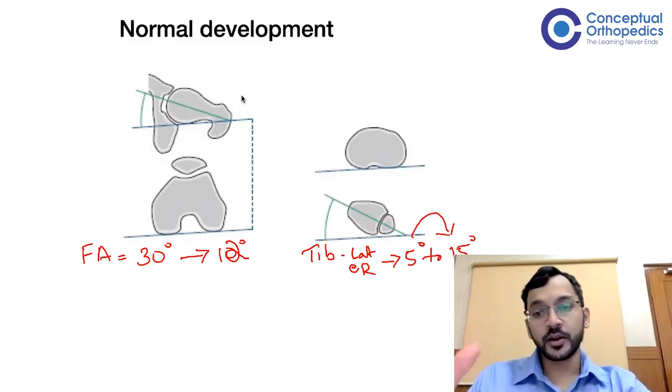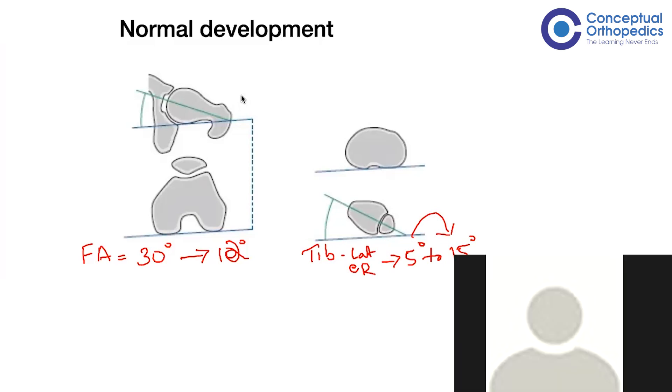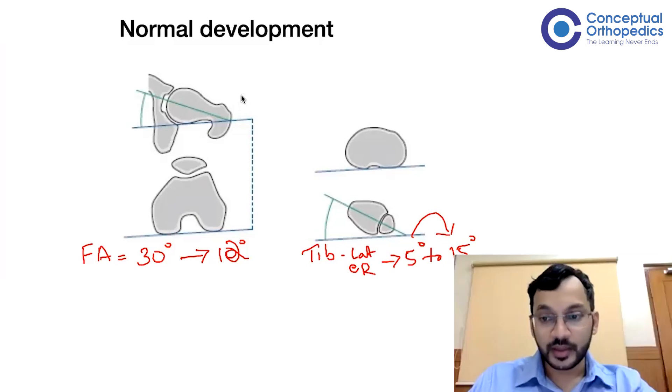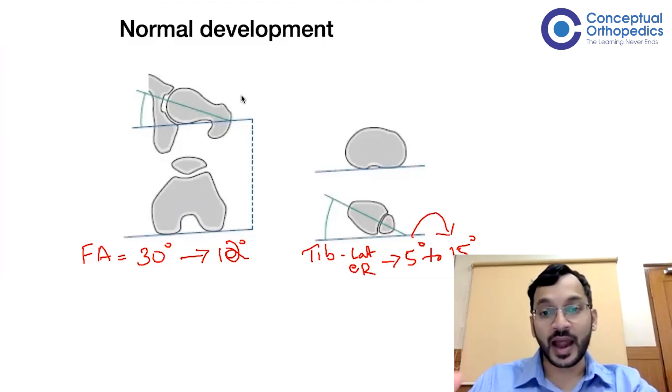That is from birth to maturity. If you are having a child who is having an in-toeing gait due to increased femoral anteversion and then you follow up this child, it slowly reduces. Similarly, if you are seeing a child with internal tibial torsion coming to you with in-toeing gait, that also slowly reduces because the normal development of the lower limbs is such that all deformities which are pointing inwards will get corrected.